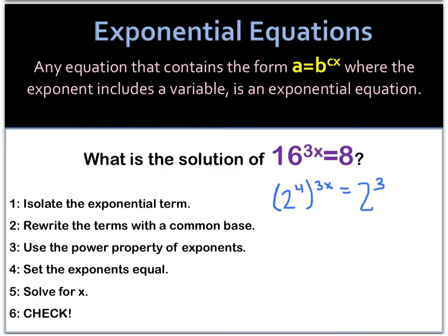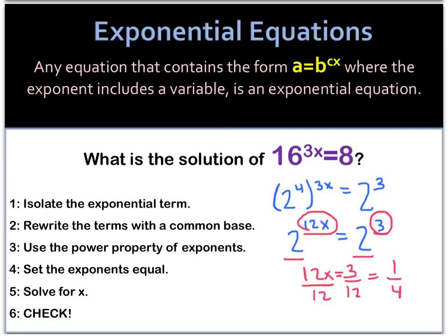Now this 4 and this 3x will multiply together, so we get 2 to the 12x power equals 2 to the 3rd. Now that our bases are exactly the same, we can set the exponents equal and solve for x. Reducing, we get 1/4, so x equals 1/4. And of course you want to go ahead and plug that back into the original equation and make sure that it works.